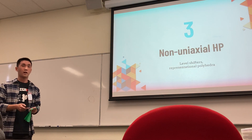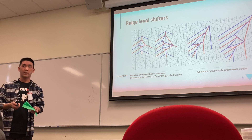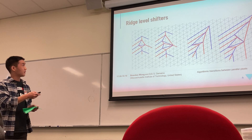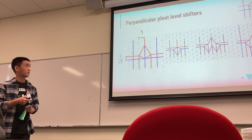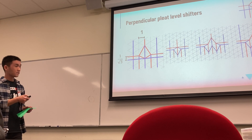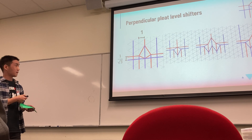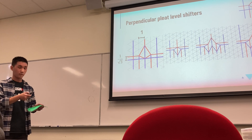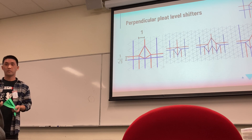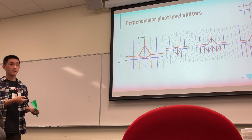Now let's look at non-uniaxial aspects of hex pleating. First, ridge level shifters — these are basically the same as in box pleating and are a special case of a universal algorithm covered in tomorrow's presentation. We also have perpendicular feet level shifters: in box pleating, shifting one unit up takes a pleat one unit wide. In hex pleating, shifting one width unit up takes only one over square root of three of a flap width, saving significantly more space. This width is exactly the same as squashing a ridge level, so level shifters come built in with the shell edges.